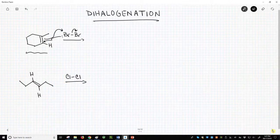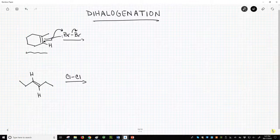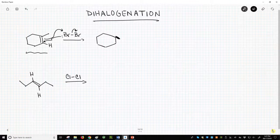The mechanism involves three arrows. Let's assume that the Br2 approaches from the top face of the alkene. We get a bromonium ion as our intermediate.